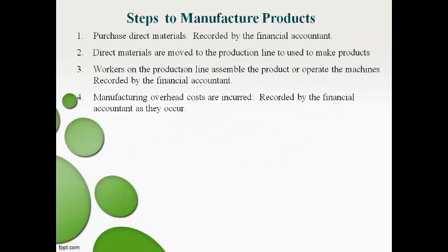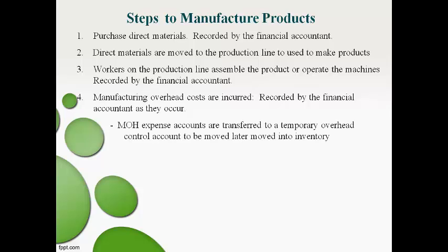First, let's talk through the steps that occur when products are manufactured. Direct materials are purchased and moved to the production line. Direct labor works and manufacturing overhead costs are incurred. These transactions are recorded by the financial accountant as they occur during the month. Manufacturing overhead expenses are moved from the expense accounts to a temporary manufacturing overhead control account to later be moved to work in process.